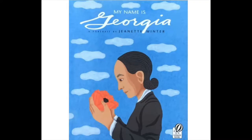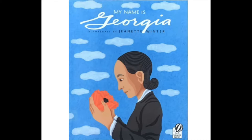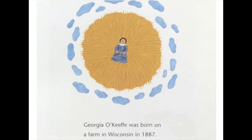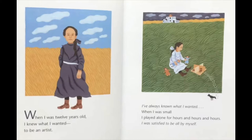'My Name is Georgia' by Jeanette Winter. Georgia O'Keeffe was born on a farm in Wisconsin in 1887. 'When I was 12 years old, I knew what I wanted — to be an artist. I've always known what I wanted. When I was small, I played alone for hours and hours and hours. I was satisfied to be all by myself.'